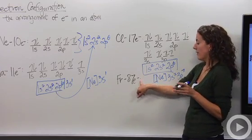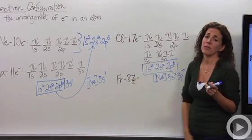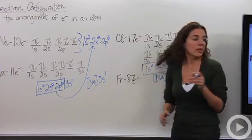But what if we come across an element that has 87 electrons, such as francium. That has a ton of electrons and I don't want to have to draw all this out. This is just a pain. So an easy way to do this is if you look at the periodic table, here's francium right here.